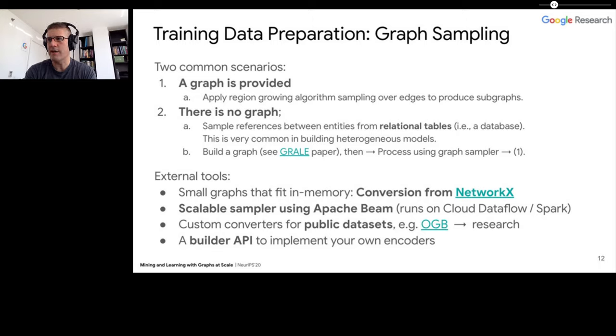For external release, we want to provide conversions for graphs that fit in memory, say graphs you could express as a NetworkX library graph from Python. If you have a graph that fits there you should be able to convert that directly to GraphTensor format and run it in a parallel way using the distributed setting that TensorFlow makes natural. Or for a larger graph, we're going to have a version of our scalable sampler that uses Apache Beam technology, and that should be runnable on Cloud Dataflow or on your own Spark cluster. This is similar to what we do with our internal technology stack. We'll have custom converters for popular research datasets. Right now, there's the Stanford effort, the Open Graph Benchmark. We should have a converter that allows you to take that, ingest it, and produce it as samples so you can run it in a distributed fashion. We'll also have a builder API to make your own encoders.